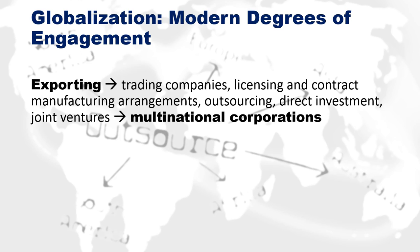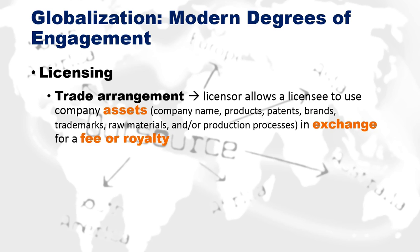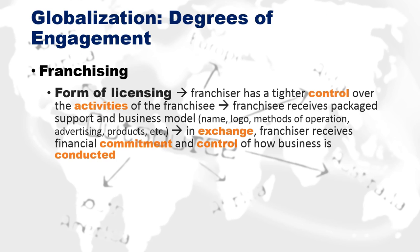Today, globalization has degrees of engagement. The lowest is exporting — making something in your nation and exporting it to another. You can also be anywhere in between: exporting, being a national corporation, doing trading companies, licensing, contract manufacturing, outsourcing, direct investment, joint ventures, and the like. Licensing is a trade arrangement where the licensor allows a licensee to use company assets — name, products, patents, brands, trademarks — in exchange for a fee or royalty.